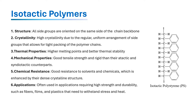In isotactic polymers all the side groups are oriented on the same side of the polymer chain backbone. This regular uniform structure allows the chains to pack closely in a highly ordered crystalline form. Therefore, these polymers exhibit high crystallinity, typically around 50–70%. Due to highly packed chains and strong intermolecular forces between the chains, they typically show a high melting point and better thermal stability.